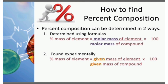There are two ways to determine percentage composition. The first is using formulas: mass percentage of element = molar mass of element divided by molar mass of compound, times 100. We already know the molar mass of each element; we just find the molecular mass of the compound and substitute to get the answer. The second is found experimentally: mass percentage of element = given mass of element divided by given mass of compound, times 100.